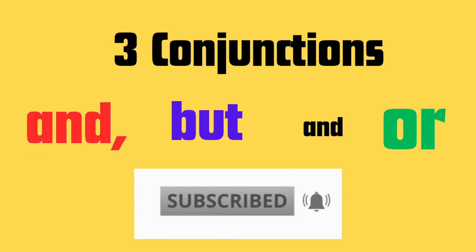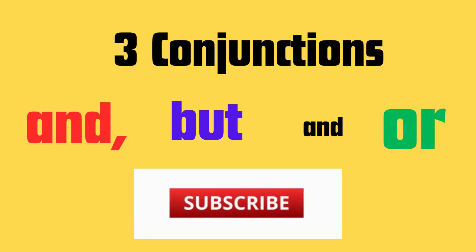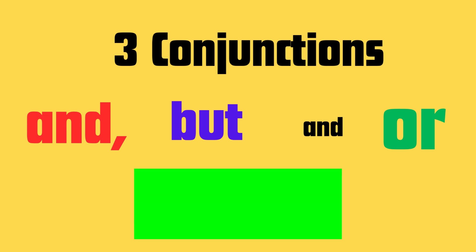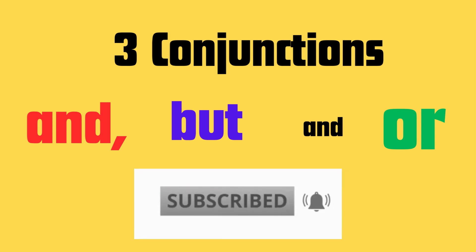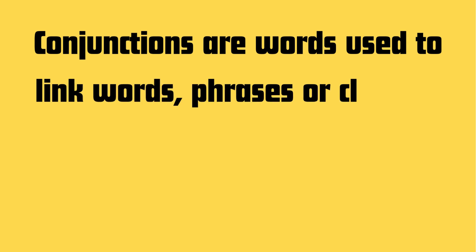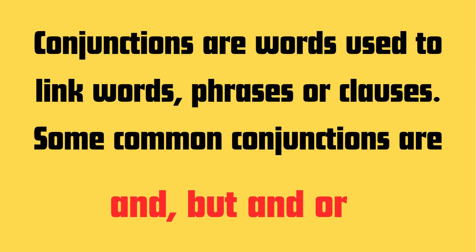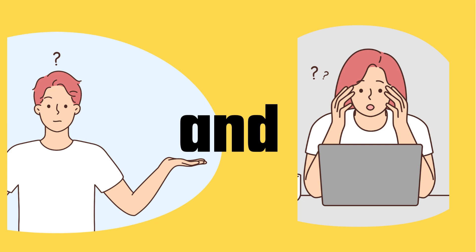Hi, welcome to ESL Now. My name is Sally and in this lesson we're going to talk about three conjunctions: and, but, and or. Conjunctions are words used to link words, phrases, or clauses. Some common conjunctions are and, but, and or.